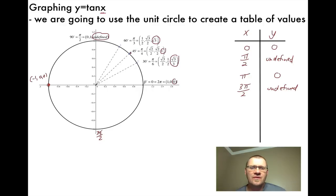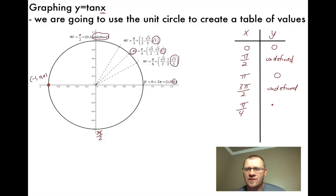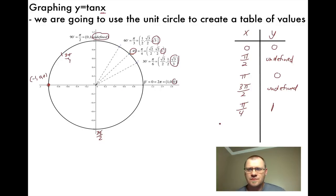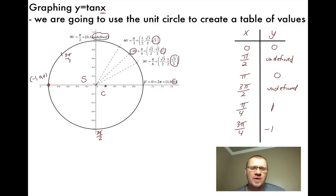We're going to use the 45-degree angle, or pi over four. At pi over four, our tan value is one. If we go over to three pi over four, our tan value is negative one. Remember that this is in the second quadrant — by using our CAST rule, the only thing that's positive is sine, which makes tan negative one.